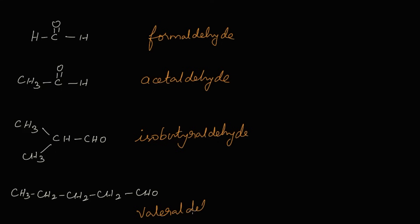The common name for the fourth structure is valeraldehyde. Now let's learn the IUPAC names for these structures.